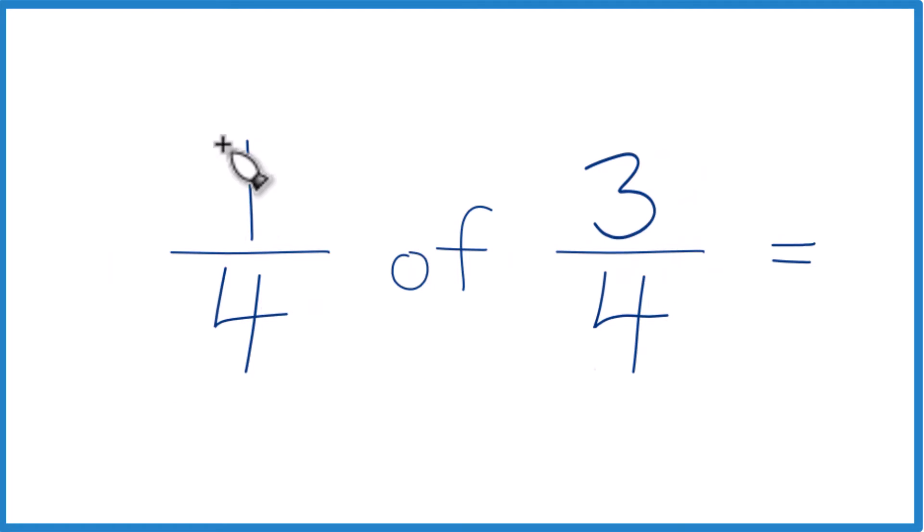The way to think of it is when you have a fraction here, this of in the middle, fraction of a fraction here, the of, you can think of that as multiplication.